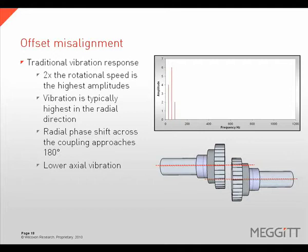This assumption can often be misleading, as a combination of the two types will create a vibration that is not purely directional in one measurement plane or the other. Offset misalignment is traditionally characterized with a 180-degree phase shift across the coupling in the radial direction. It is important to look at the machine as a whole, and pure offset misalignment will typically exhibit lower axial readings compared to the radial readings.